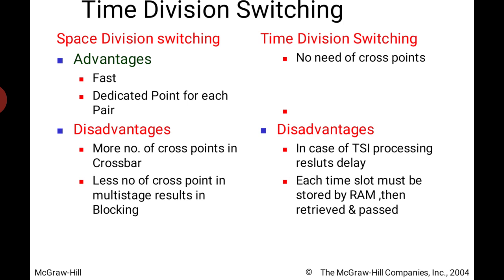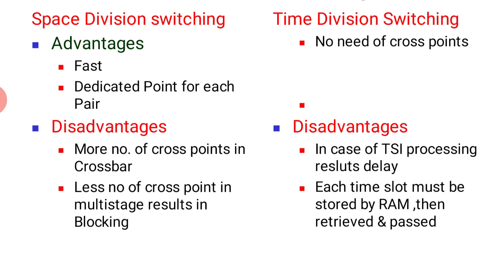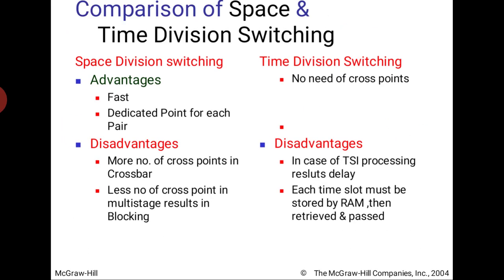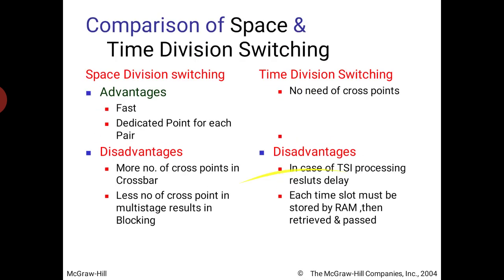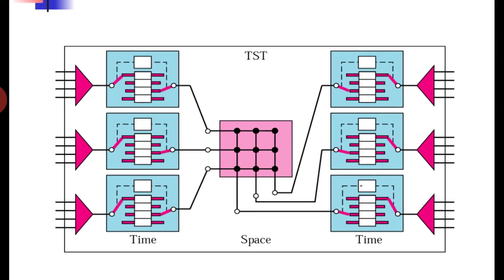The benefit of space division switching is that it is fast, with a dedicated point for each pair. The disadvantage is the large number of crosspoints in crossbar, or blocking in multi-stage when switches are fewer. In practice, neither pure circuit switching nor pure time division switching is used alone in a complete network layout — both are combined at different points.